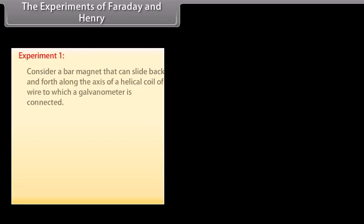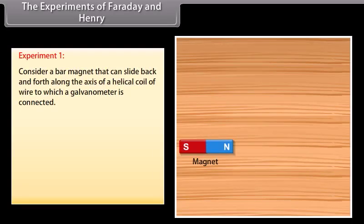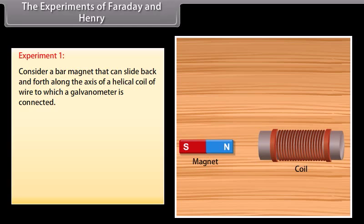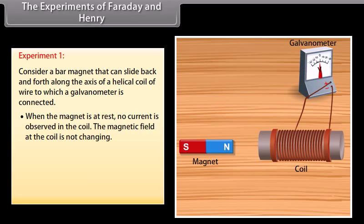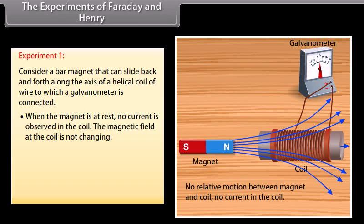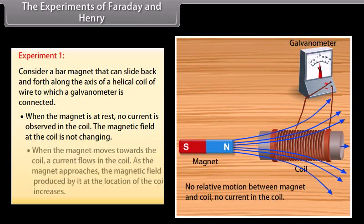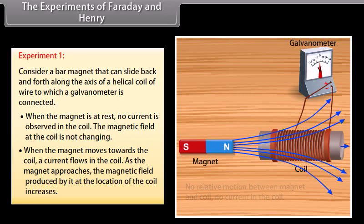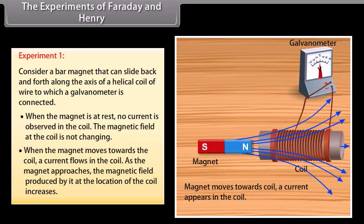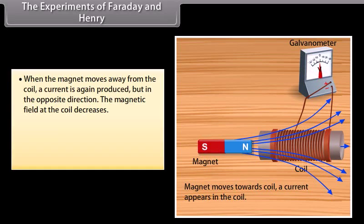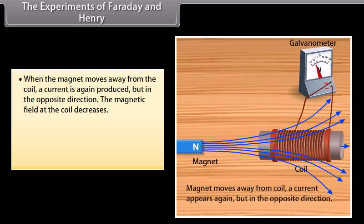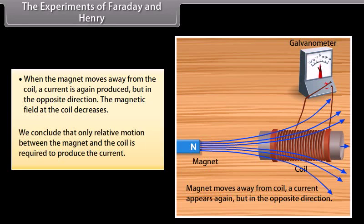The experiments of Faraday and Henry. Experiment 1: Consider a bar magnet that can slide back and forth along the axis of a helical coil of wire to which a galvanometer is connected. When the magnet is at rest, no current is observed in the coil — the magnetic field at the coil is not changing. When the magnet moves towards the coil, a current flows in the coil, and the magnetic field increases. When the magnet moves away, a current is produced in the opposite direction and the magnetic field decreases. We conclude that only relative motion between the magnet and the coil is required to produce the current.